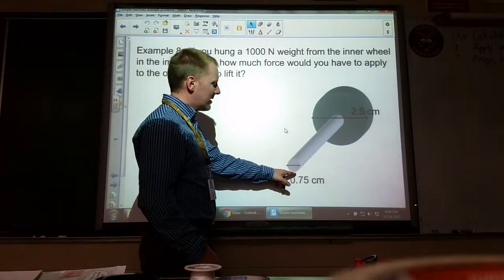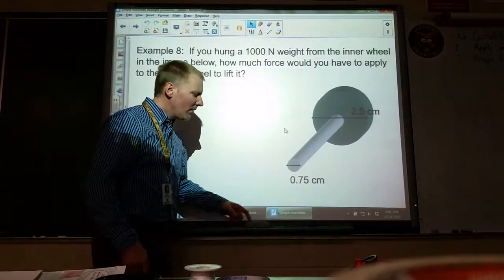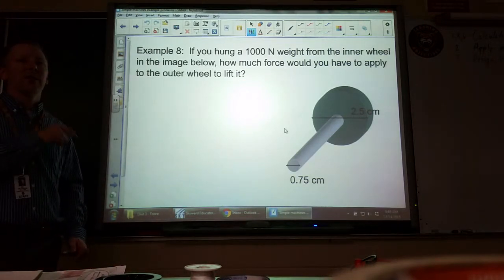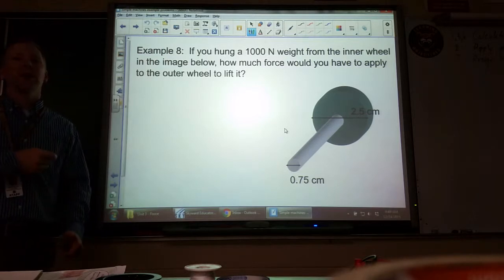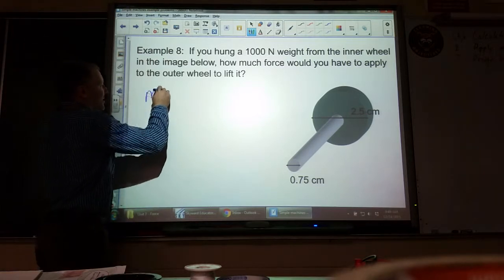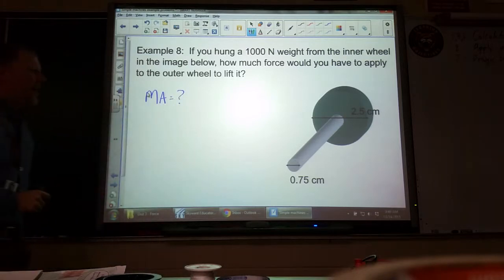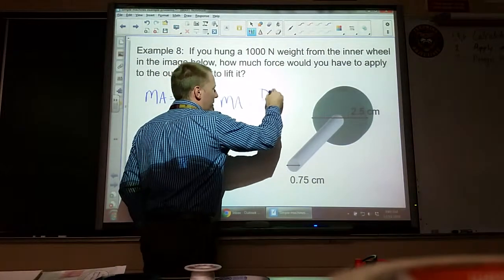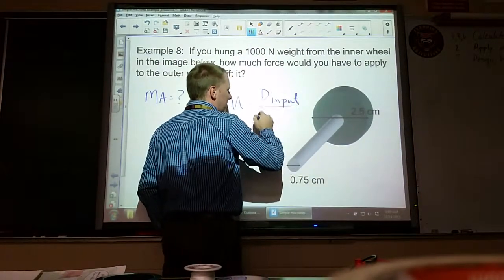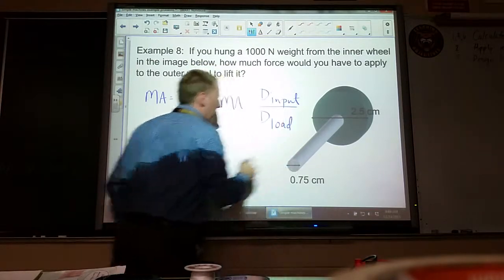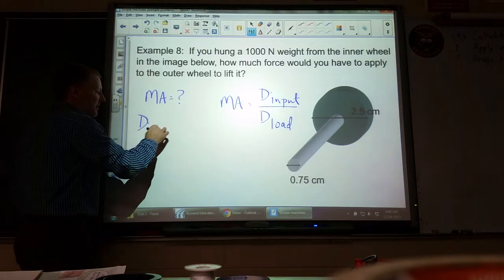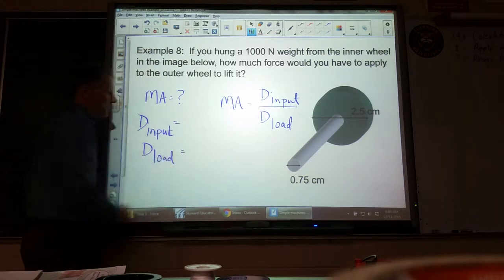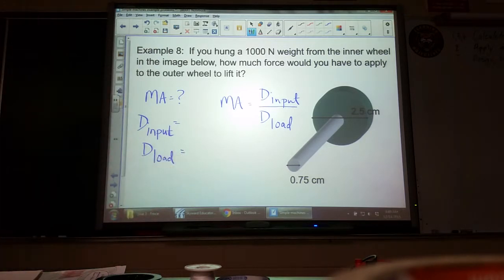We've got two diameters here, so the first way I'm going to do this is to do an intermediate step and find the mechanical advantage involved in this machine, because once we do that the second part is pretty easy. So in part A we'll find the mechanical advantage. I know that for a wheel and axle, mechanical advantage is input diameter divided by the load diameter.